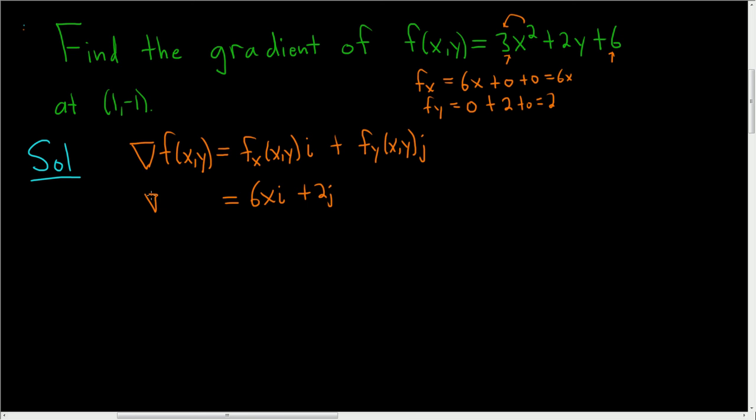So del f of xy is equal to 6xi plus 2j. We just want the gradient at (1, -1), so we evaluate this at that point.